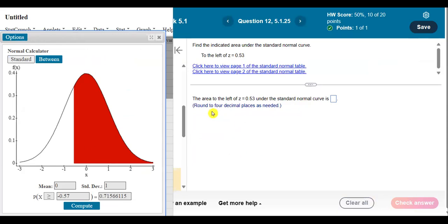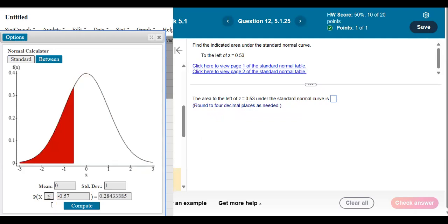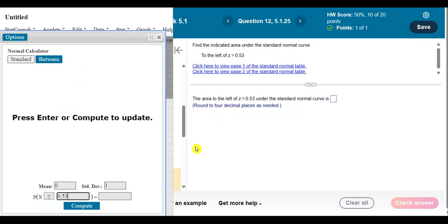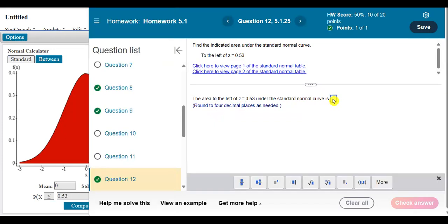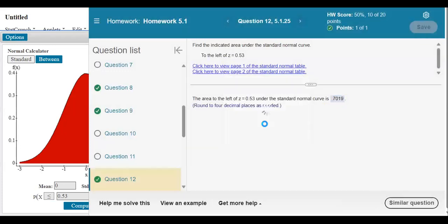All right, back to this question. So the area to the left of a z of 0.53 left. Make sure your symbol points left. Left is less than 0.53. Enter. And it looks like we got 0.70. And there we go.